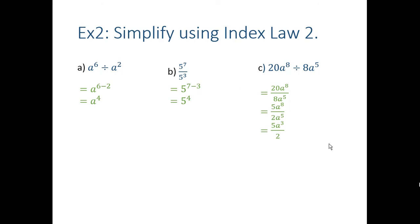So that's our second index law. So we've done multiplication, we've done division. What comes next? Well, zero.